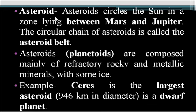Asteroids encircle the sun in a zone lying between Mars and Jupiter. They are only found in that belt. So if an exam question states asteroids are found between Venus and Earth, that option would be wrong. The belt in which these asteroids move is known as the Asteroid Belt. Asteroids, often called planetoids, are composed mainly of refractory rocky and metallic minerals with some ice.